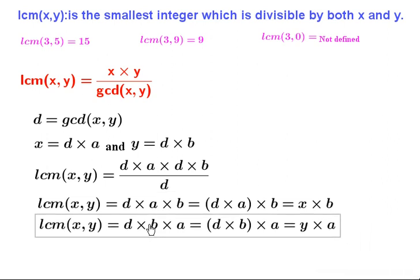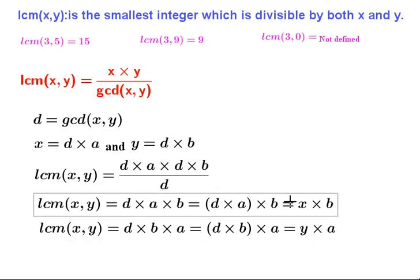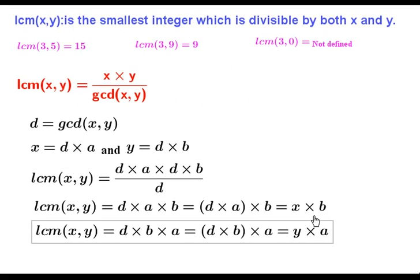Since multiplication is commutative, we can also write LCM(x, y) = d*b*a = (d*b) * a = y * a, which shows LCM is also a multiple of y. Using both results, LCM is a multiple of x as well as a multiple of y — in other words, it is a common multiple of x and y.